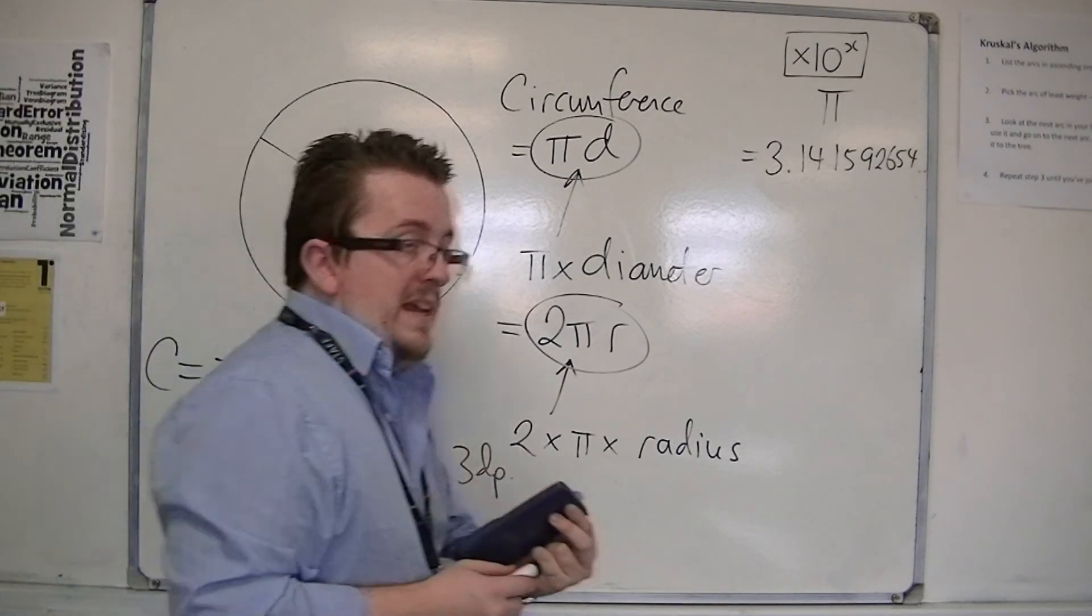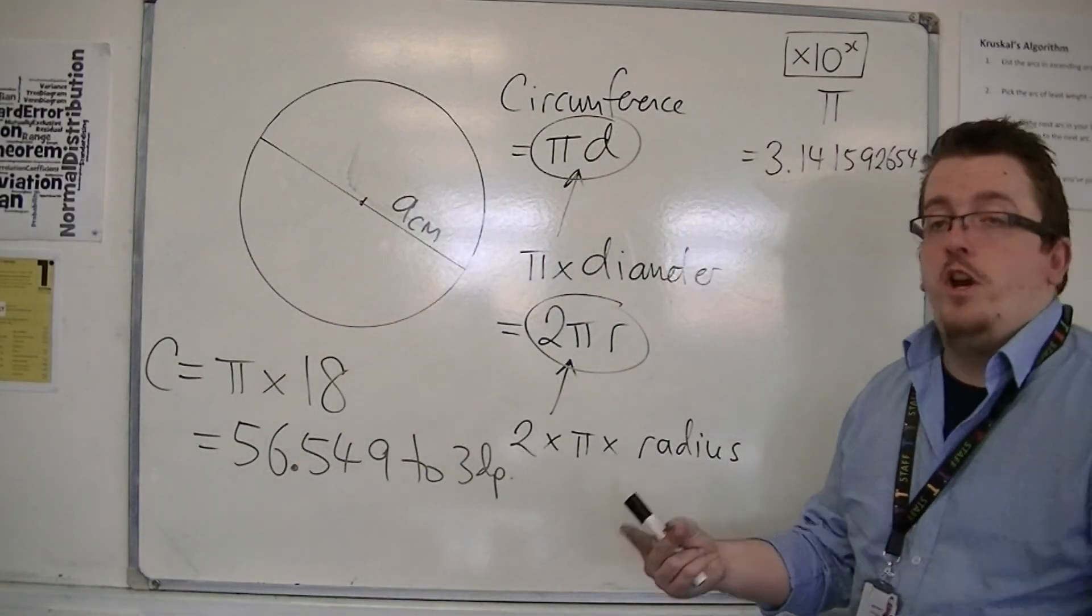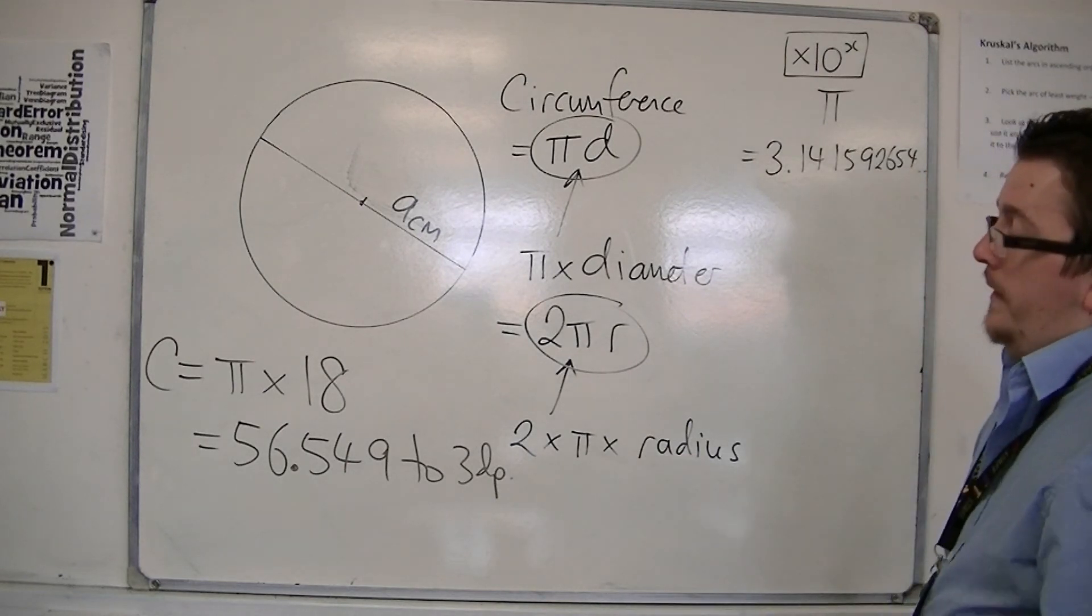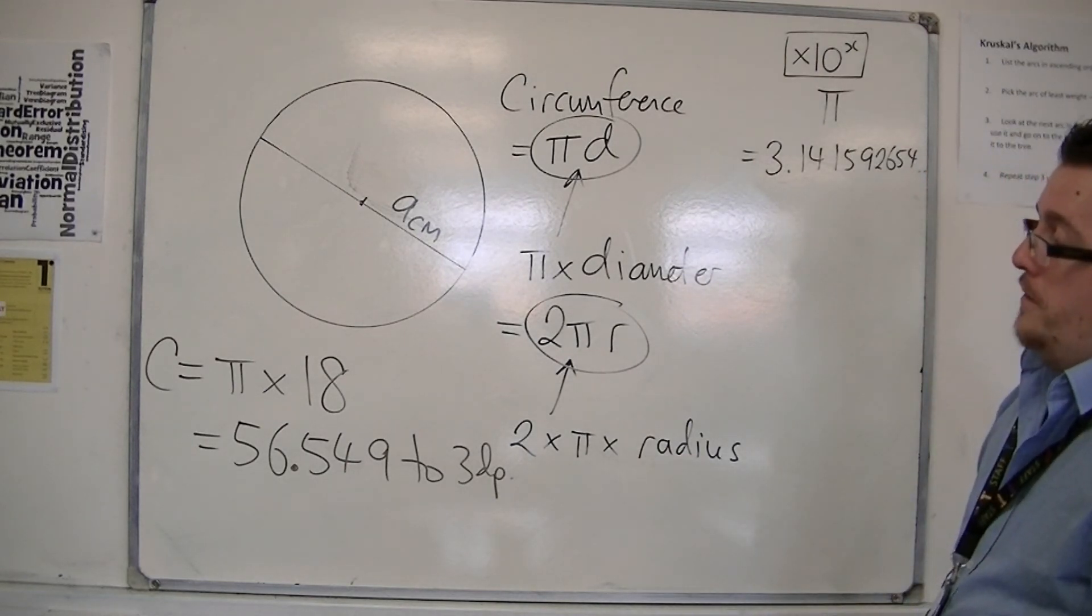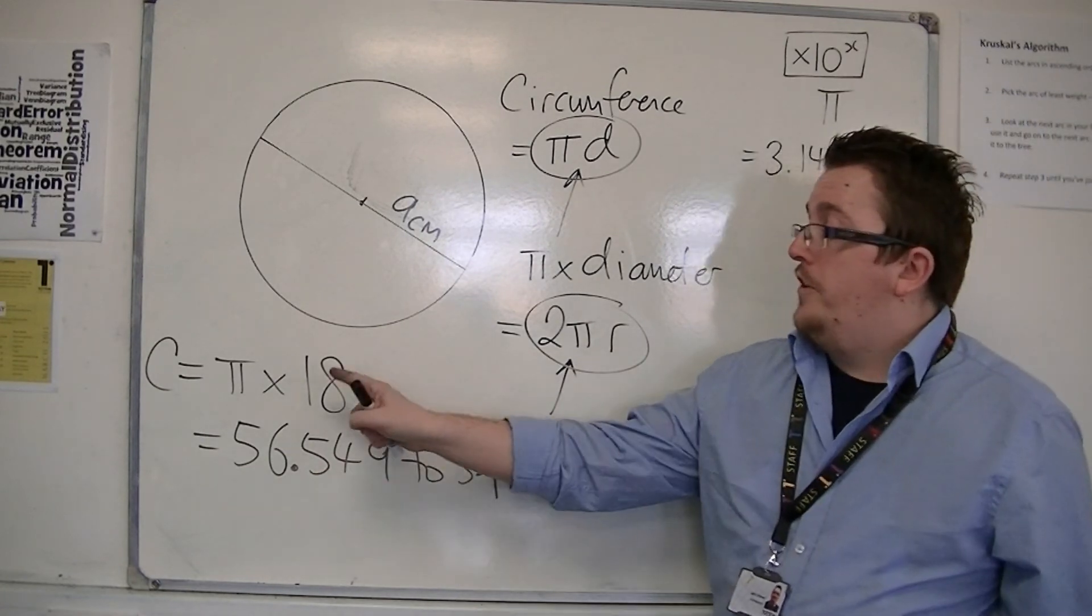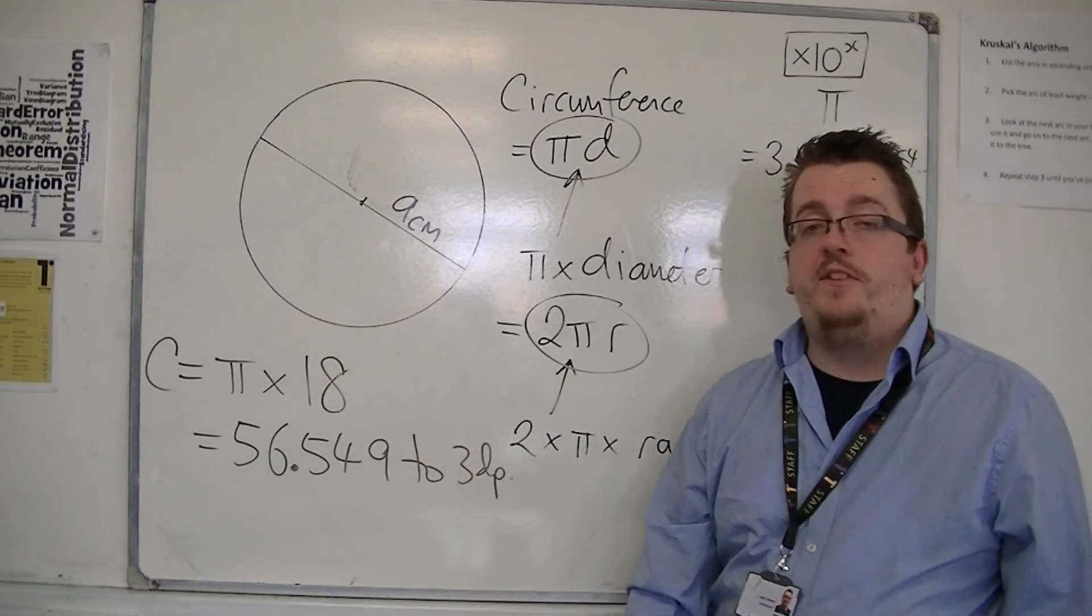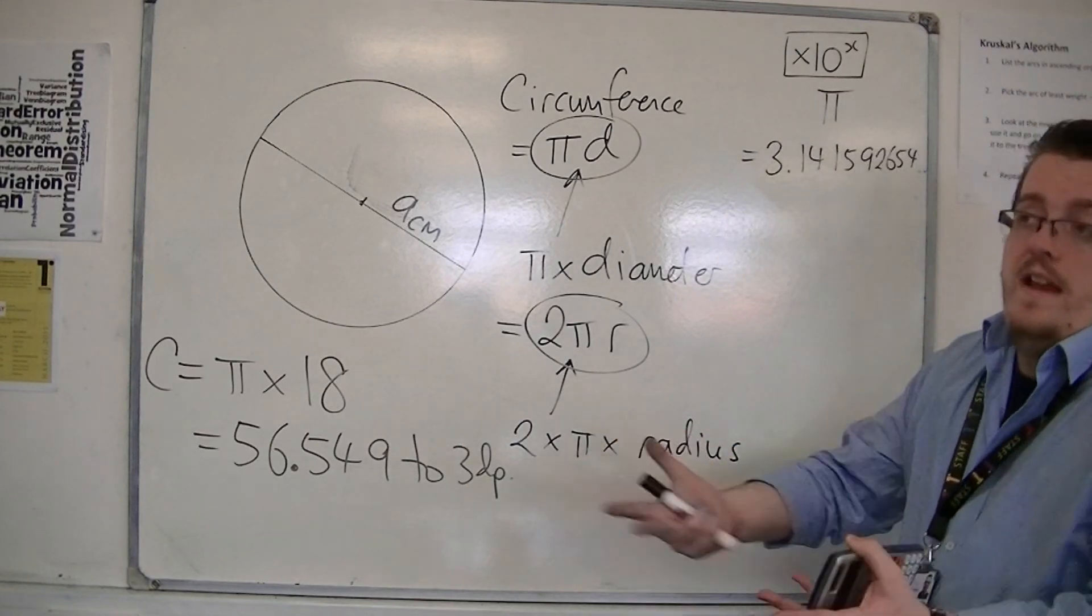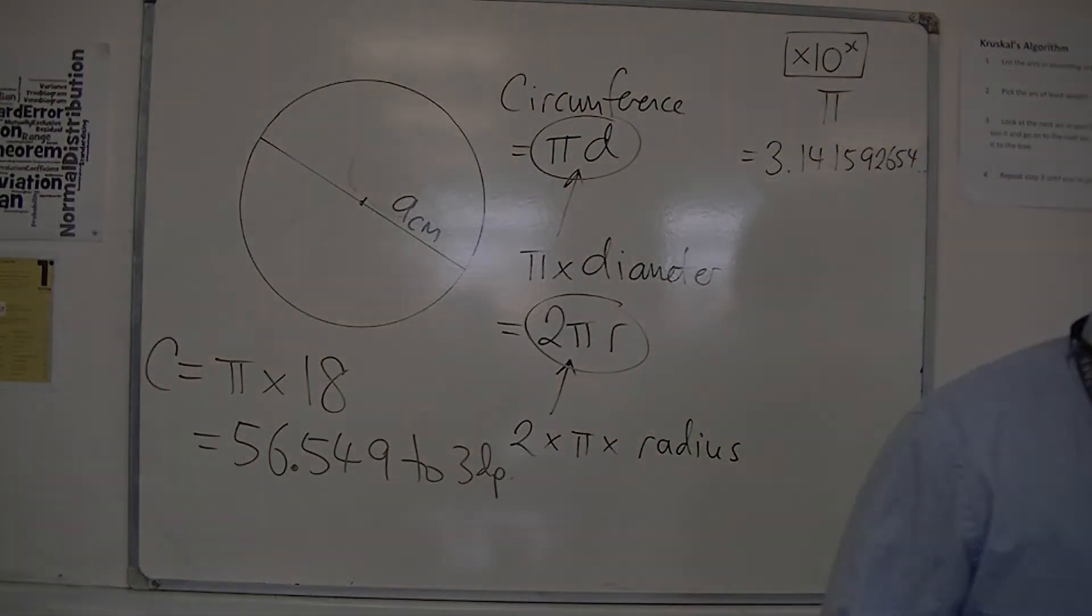Now, the number of decimal places that you're required to show depends upon the question, and it will be specified for you. But that is how you can find the circumference. Multiply the diameter by pi, and then press the SD button if necessary. Bye. Thank you.